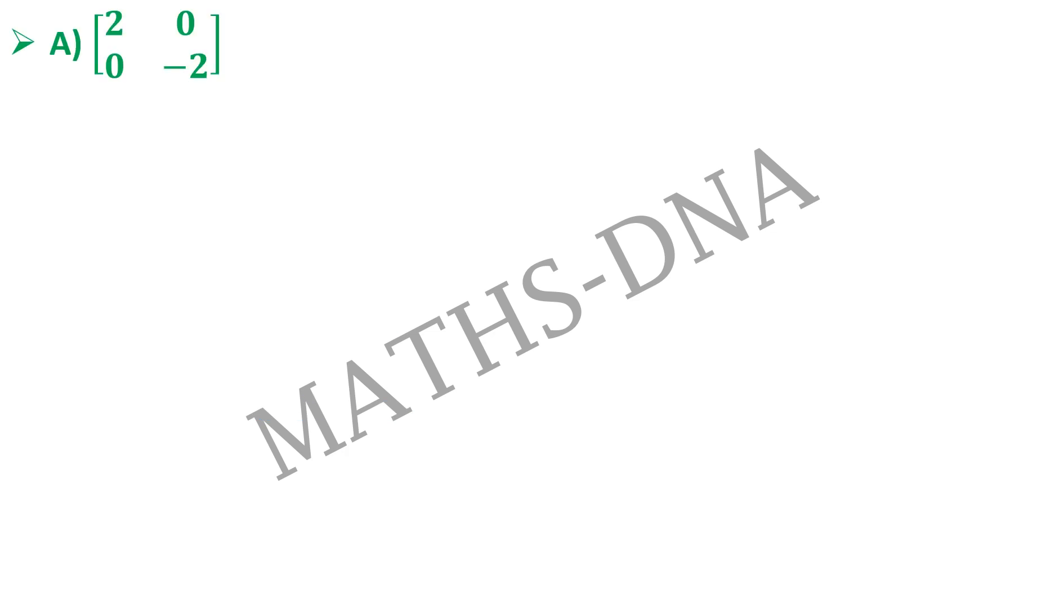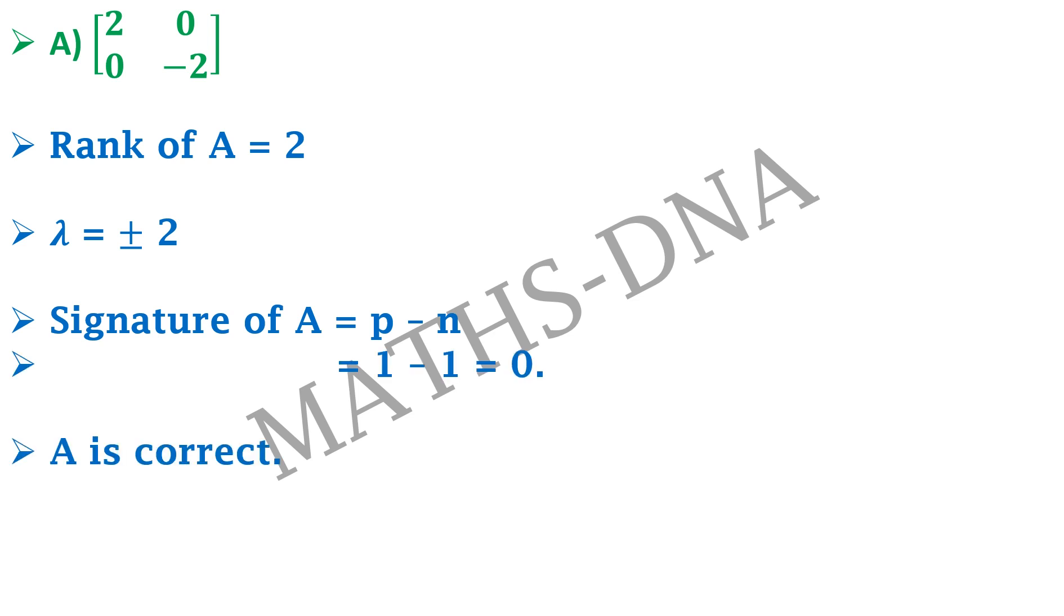The first option 2 0 0 minus 2. Clearly rank is once again 2. Eigenvalues are plus minus 2 that is 1 positive and 1 negative. So the signature of the matrix will be P minus N, that will be again 1 minus 1 and that will be 0. So option A is correct.